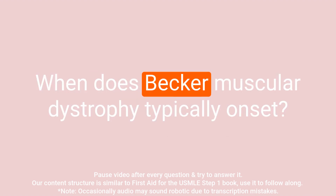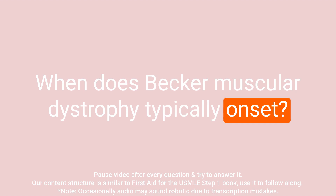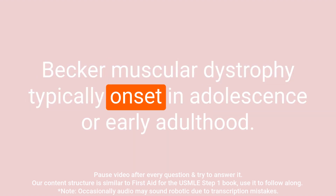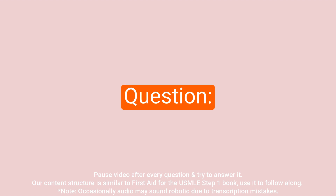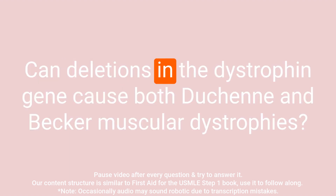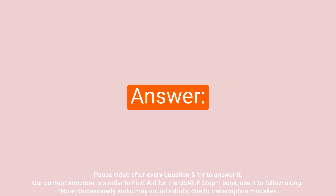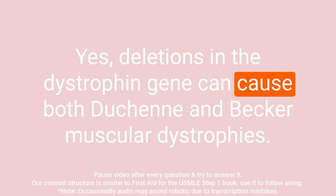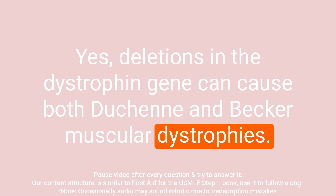Question: When does Becker muscular dystrophy typically onset? Answer: Becker muscular dystrophy typically onsets in adolescence or early adulthood. Question: Can deletions in the dystrophin gene cause both Duchenne and Becker muscular dystrophies? Answer: Yes, deletions in the dystrophin gene can cause both Duchenne and Becker muscular dystrophies.